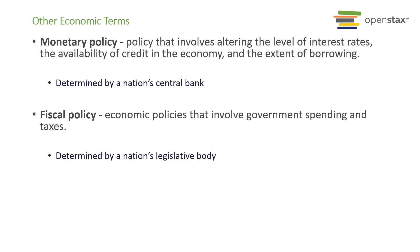The next one is called fiscal policy. Fiscal policy is whenever the government is either spending money or changing the tax policies — either spending more money in the economy or reducing how much tax we collect from the economy. Those two approaches can also impact our economic outlook. That's called fiscal policy, and it's usually conducted by the federal legislature — in America, that's our US Senate and US Congress, through tax policies and our government budget.